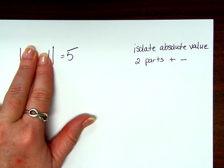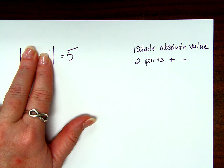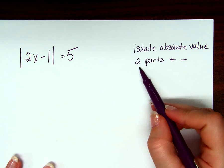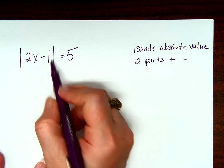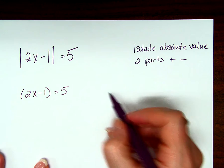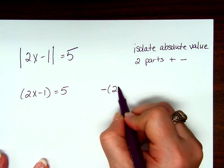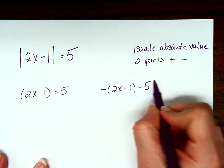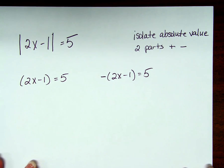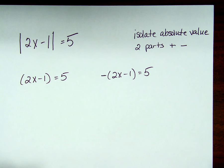After we isolate the absolute value, we need two parts. We need a positive part and a negative part. Why do we need two parts? What numbers can go inside of this absolute value sign that if I take the absolute value of it, it equals 5? What can I take the absolute value of that gives me an answer of 5? 5 is one of them. Negative 5 is the other one. Absolutely. Because remember, absolute value is our distance from 0. There's two things that are 5 units from 0. There's a 5 and there's a negative 5. So I need two parts. I need what's inside the absolute value to be positive, and I need what's inside the absolute value to be negative.